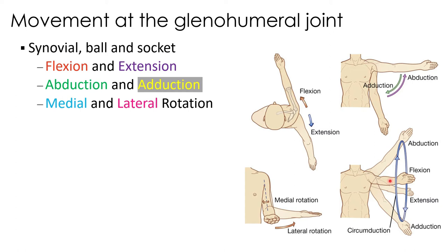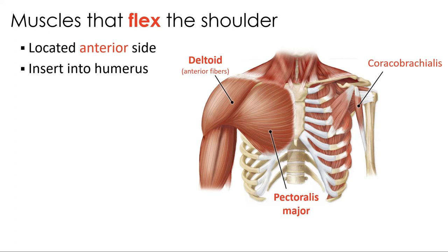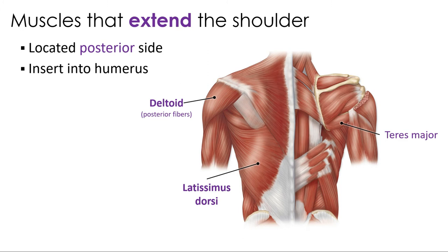Muscles that flex the shoulder — three muscles, colored red — are the anterior fibers of the deltoid, the pectoralis major, and the coracobrachialis. All are located on the anterior side and insert into the humerus. Muscles that extend the shoulder also insert into the humerus but are on the posterior side: the posterior fibers of the deltoid, the teres major, and the latissimus dorsi. Note that the teres major and latissimus dorsi are a paired set — each has the same three actions.